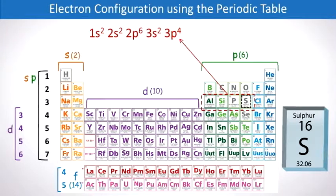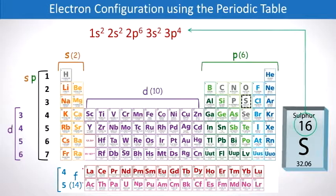3p4, and we stop at sulfur. And that gives us the electron configuration, shown here, corresponding to the 16 electrons in sulfur.